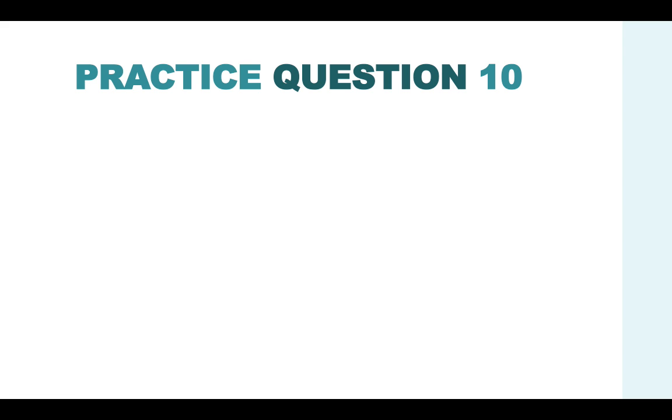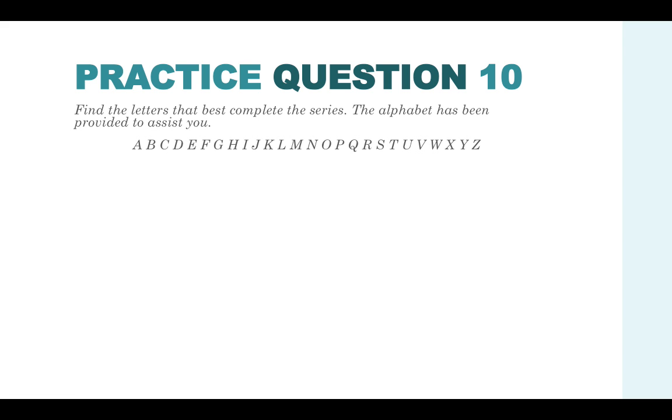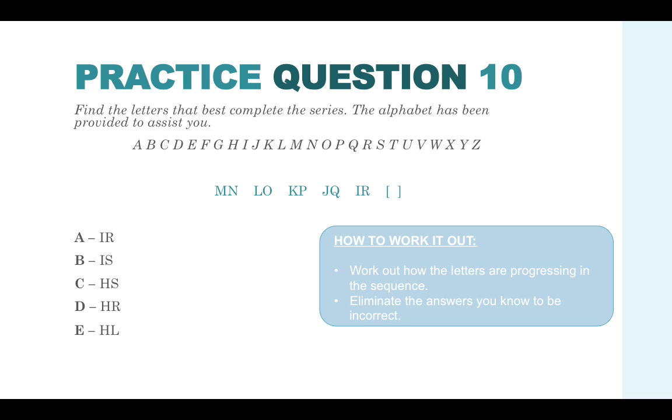It's quite tricky, these ones. So let's have another go at this type of question. This one we've got M, N, L, O, K, P, J, Q, I, R. And you're finding out the next one that comes in the sequence. Here are your answer options. Work out how the letters are progressing in the sequence. Eliminate the answers you know to be incorrect.